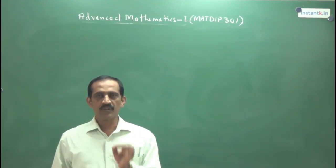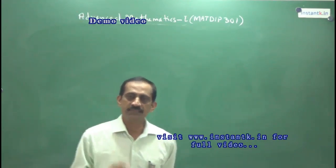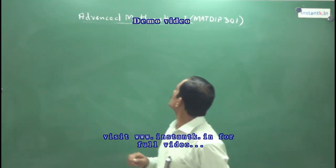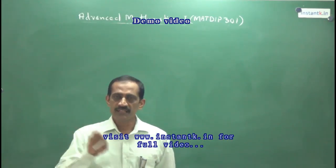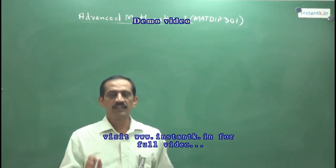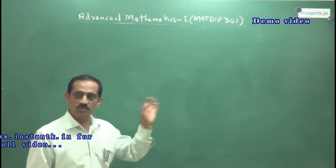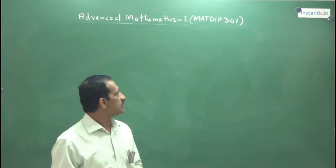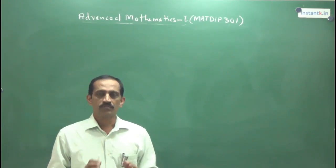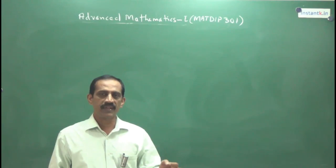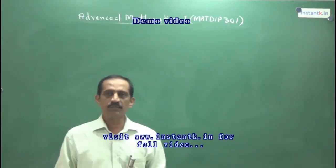In third semester, you have to complete one subject titled Advanced Mathematics 1, that is MAT DIP 301. In the next semester, fourth semester, you have to complete Advanced Mathematics 2, subject code MAT DIP 401. These two papers you have to clear, either in third semester or fourth semester, so you should complete them from the beginning itself.